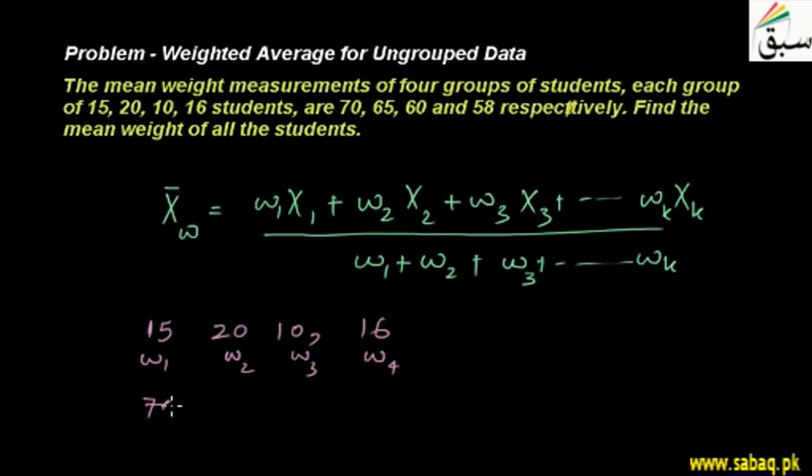This means 70, 65, 60 and 58. This is W1, this is X1, this is X2, this is X3 and this is X4. This is respectively.